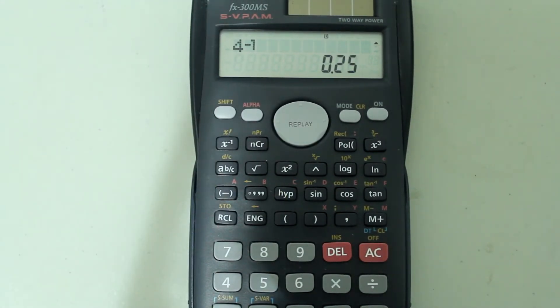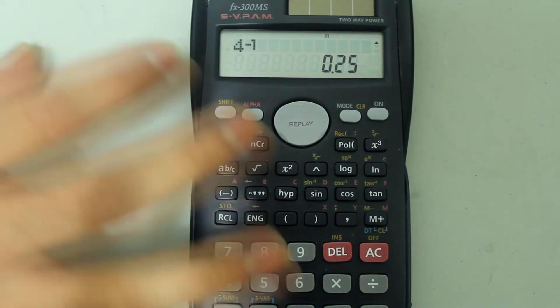which is 0.25. This may be more useful in a situation where you have to find the reciprocal of, let's say, a decimal number such as 0.326.